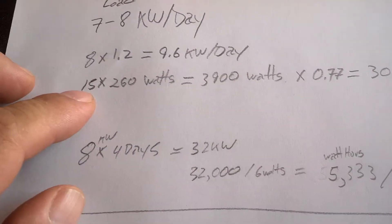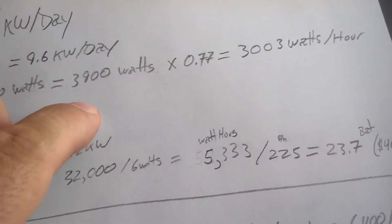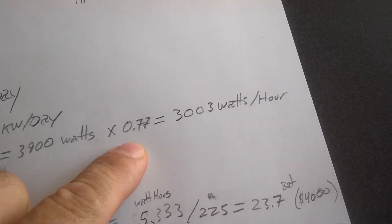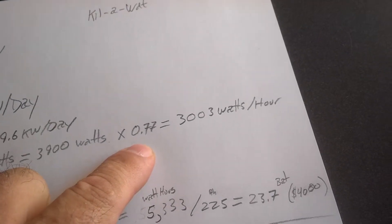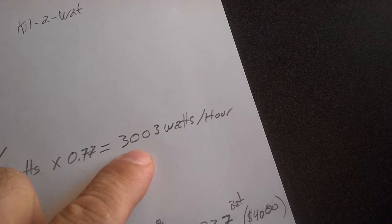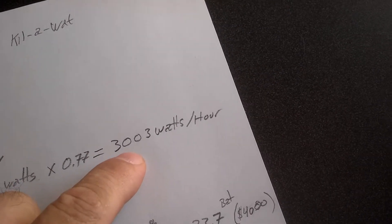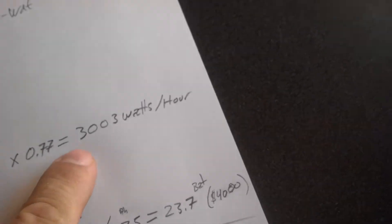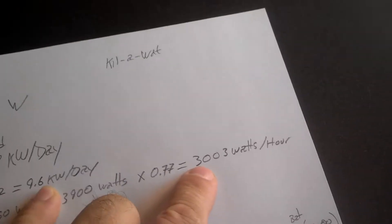If we go with 15, 260 watt panels, it comes up to 3,900. But after we derate the panels from the STC, the standard test control to what they really put out, they're going to put out about 3,000 watts an hour when the sun's hitting on them perfectly. So in order to get our 9.6, we're going to need at least a little over 3 hours per day.